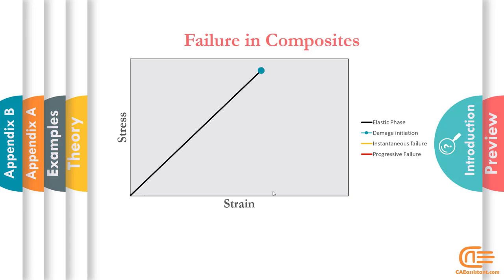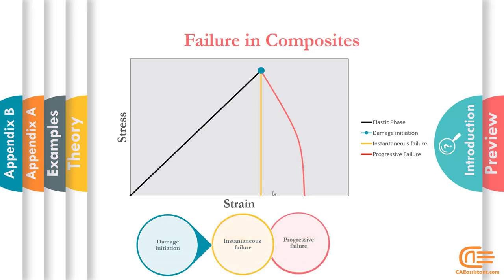This point, according to the diagram showing green, is the starting point of failure. Now, there are two modes. Either the composite material failed instantly, which is similar to brittle materials, or the failure is accompanied by a reduction like ductile materials, and as it happens, the resistance of the material to failure decreases. In this diagram, the green dot shows the failure detection point, the yellow diagram shows the instantaneous failure, and the red diagram shows the progressive failure.